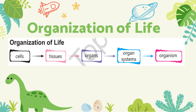This is the organization of life. The basic functional and structural unit of life is called a cell. Cells make tissues, tissues make organs, organs make organ systems, and organ systems make organisms.